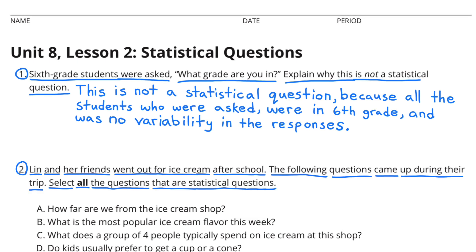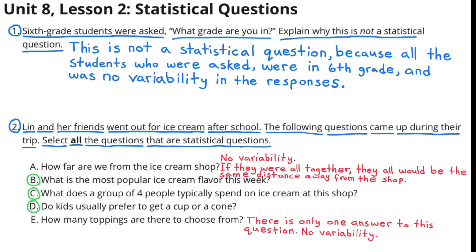Problem 2: Lynn and her friends went out for ice cream after school. The following questions came up during their trip. Select all the questions that are statistical questions. A and E are not statistical questions because there's no variability. In A, if they were all together, they would all be the same distance away from the shop. And E, there is only one answer to this question, so there's no variability.